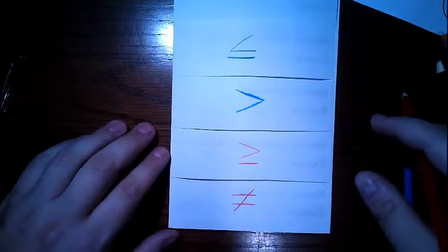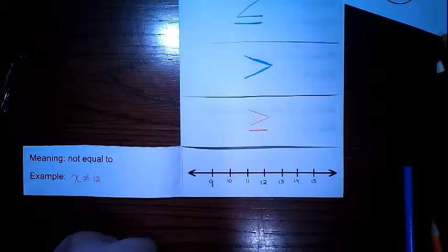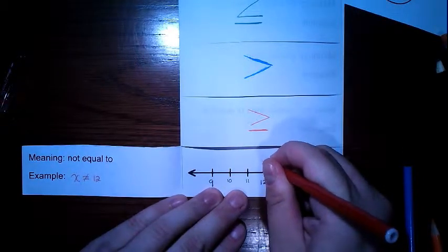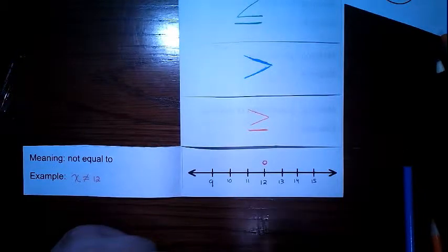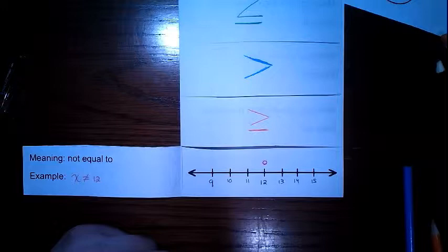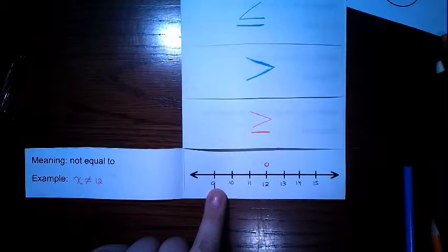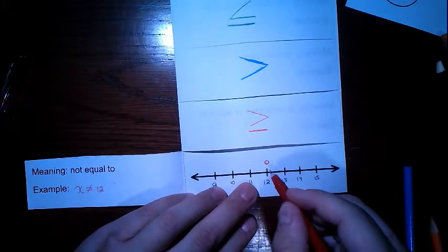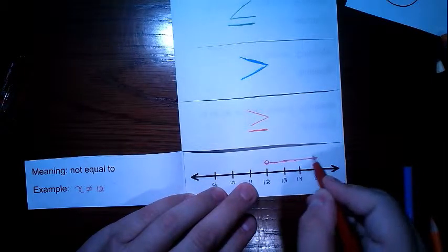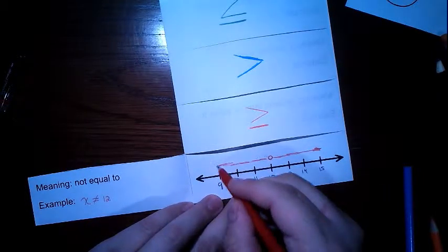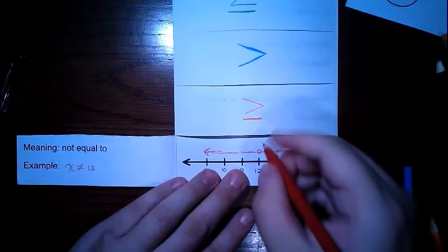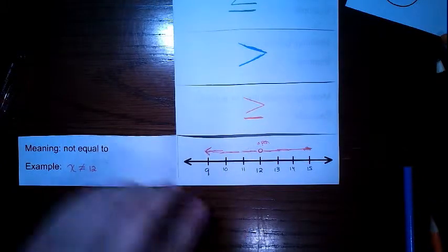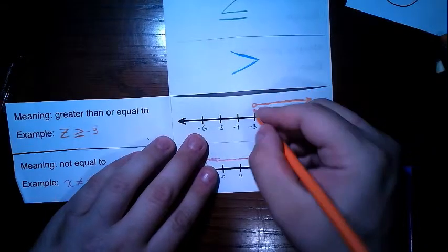Lastly is not equal to — you don't see this one often. For x does not equal 12, put a circle above 12. Could x be 11, 10, 9? Yes — all of those values work except 12. So shade everything to the left and to the right, with an open circle at 12.